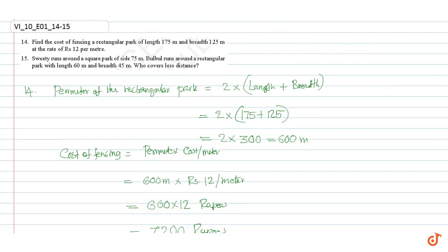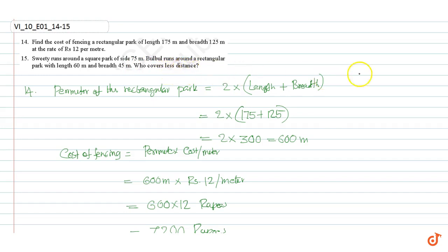Question number 15: City runs around a square park of side 75 meters. Bulbul runs around a rectangular park with length 60 meters and breadth 45 meters. Who covers less distance?